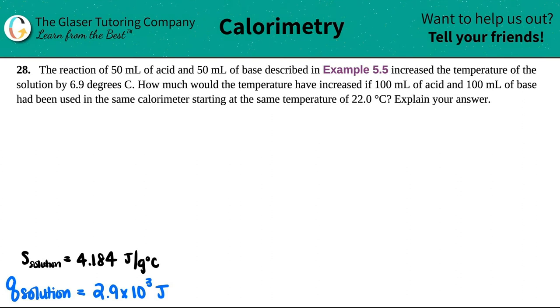Number 28. The reaction of 50 mL of acid and 50 mL of base described in Example 5.5 increased the temperature of the solution by 6.9 degrees Celsius.